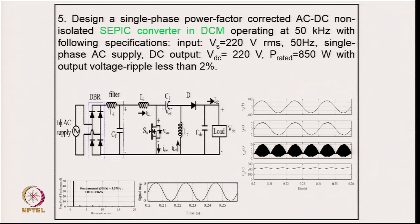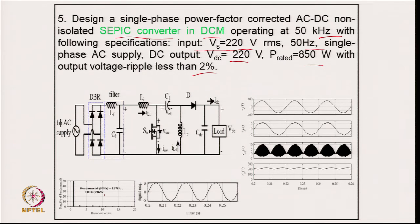Example 5: design a single phase power factor corrected AC-DC non-isolated SEPIC converter operating in discontinuous conduction mode at 50 kHz. Specifications: 220 V RMS, 50 Hz single phase supply, output voltage 220 V, rated power 850 W, output voltage ripple less than 2 percent. After the diode rectifier we have an EMI filter and then the SEPIC converter with output capacitor, with two inductors, one intermediate capacitor, and the input inductor designed in discontinuous mode.